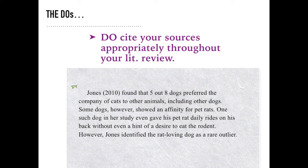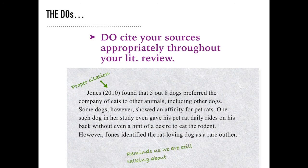So let's try it again. Notice how this example references the source right at the start. Because we've introduced that source up front, it's easier to see that the subsequent information is coming from the same study. We have that same second sentence: 'Some dogs, however, showed an affinity for pet rats.' But because we named the source in the beginning, that sentence seems to flow and make sense. The writer also reminds us later in the paragraph that they're still talking about Jones. So we can read this paragraph and feel pretty comfortable knowing what information came from the source and how it all fits together. This writer was very specific and walked us through the information clearly.